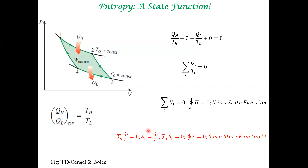Clausius introduced this argument. We are going to denote Q/T with the entropy symbol. Q here is the heat exchanged between the system and the reservoir with appropriate sign conventions. Because it's a reversible heat exchange, T_i is the temperature at the boundary — the temperature within the entire system is T_i, and the temperature of the reservoir is also T_i. We are representing this by the entropy symbol and giving it the name entropy. We will not interpret it any further for now, but irrespective of interpretation, we can say this entropy is a state function.